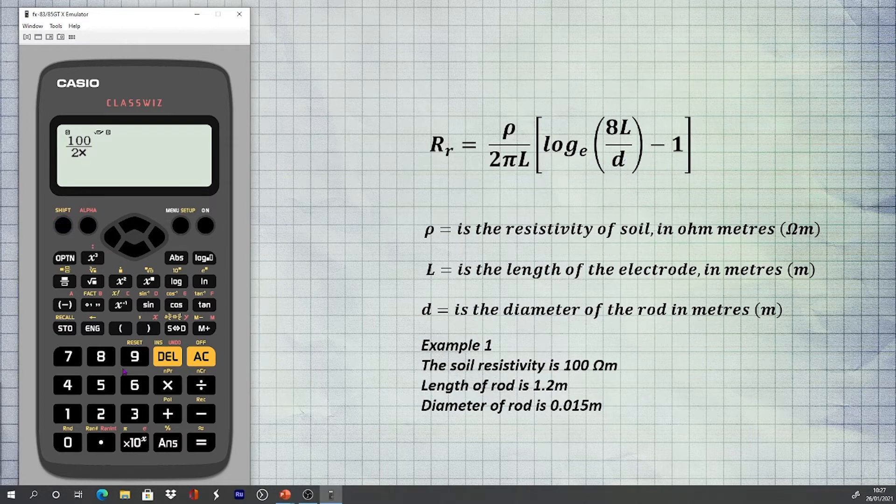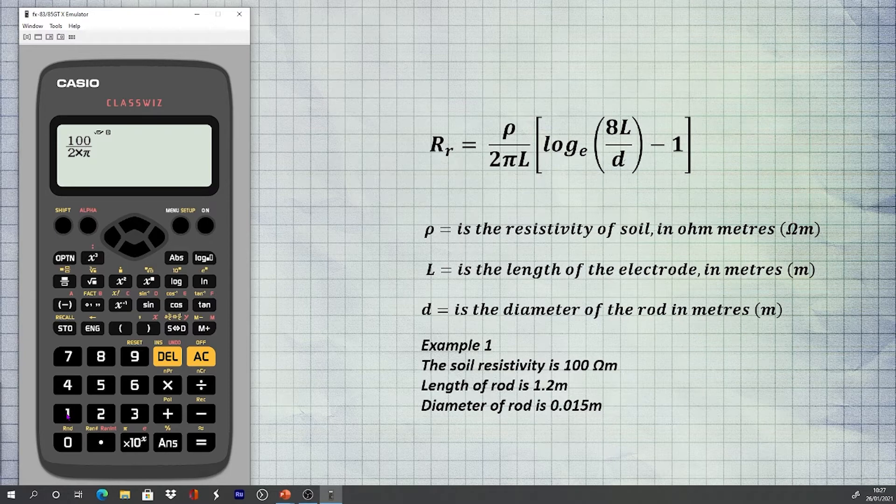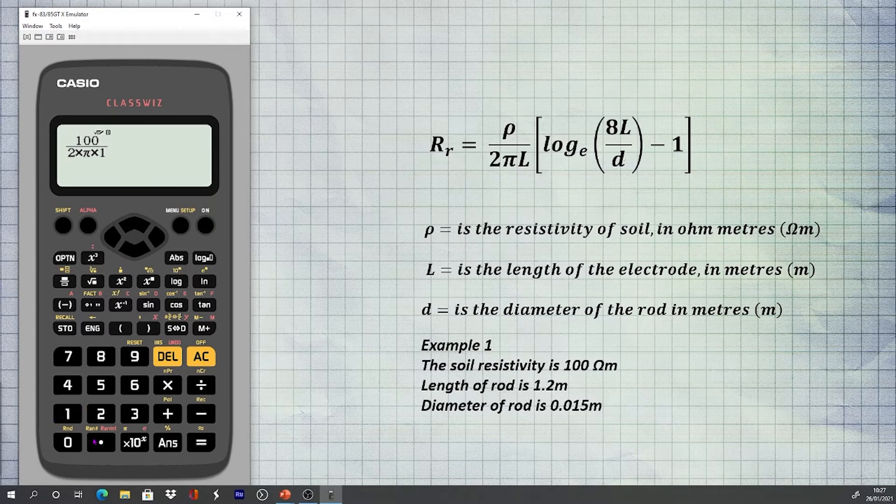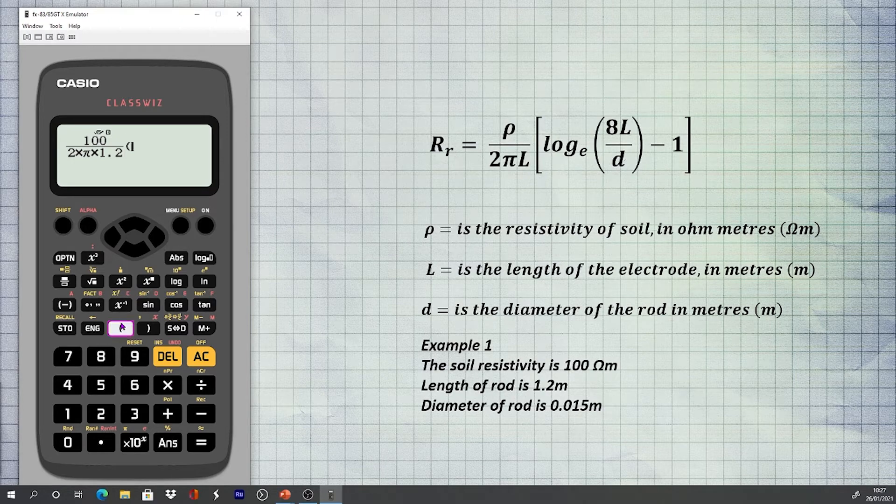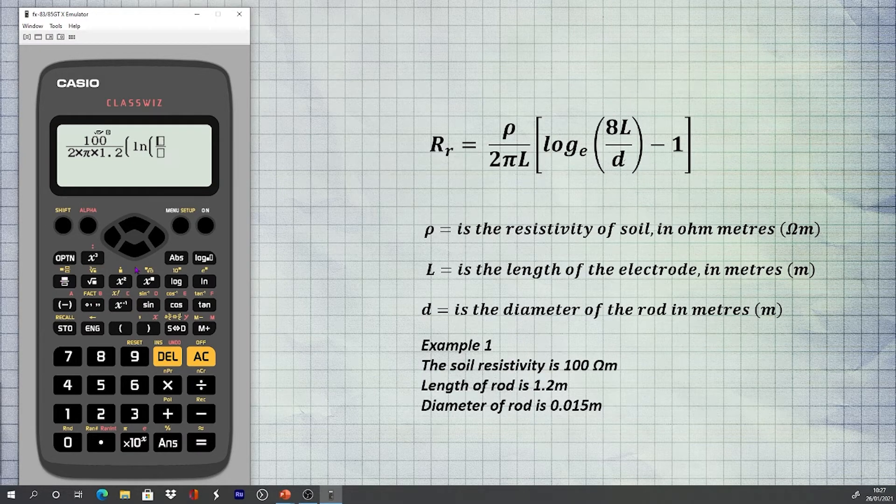This is the formula for calculating the resistance of a single earth rod once you have an idea of the resistivity of the soil. As stated previously, the Casio FX-85GT makes the calculations so much simpler. A previous video explains the functions in detail.